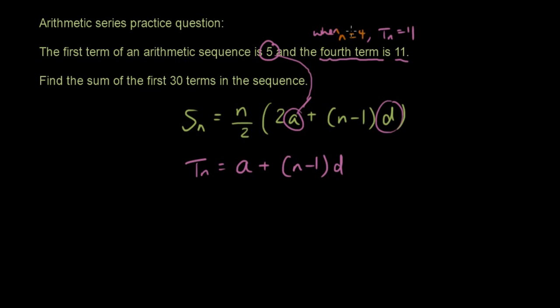So we're going to substitute that in. T4 equals 5 plus 3d. 3 comes from n minus 1, so 4 minus 1 is 3. So T4 equals 11, meaning 11 equals 5 plus 3d. 11 minus 5 is 6 equals 3d, so d equals 2.